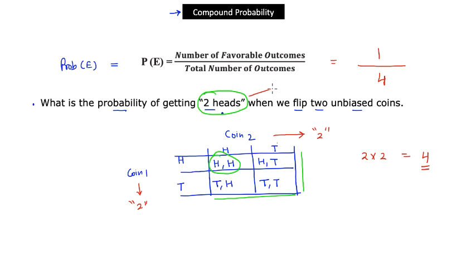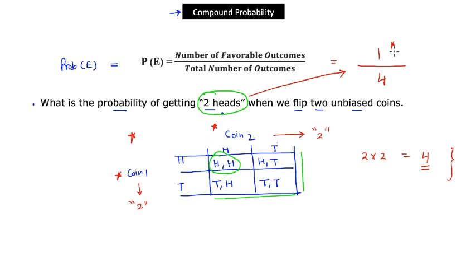The probability of getting two heads is 1 over 4. The matrix method works best when you have two events that are independent and not too many outcomes per event. This is a classic example of independent events because the result of coin one does not control the outcome of coin two.